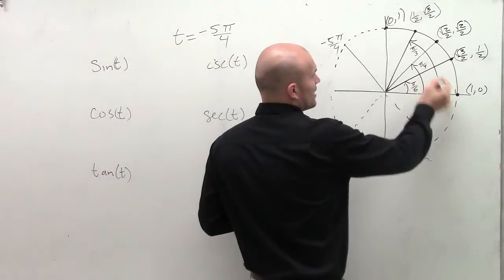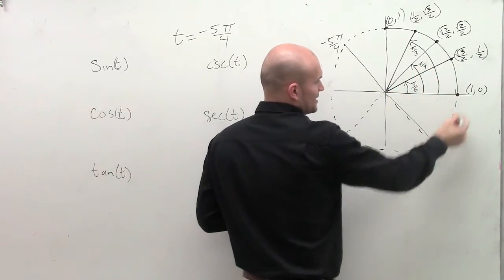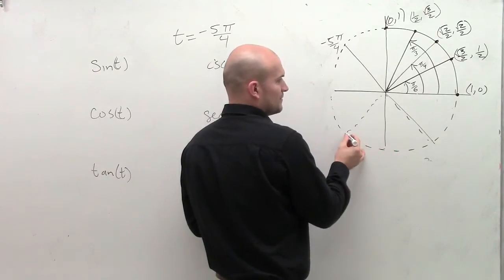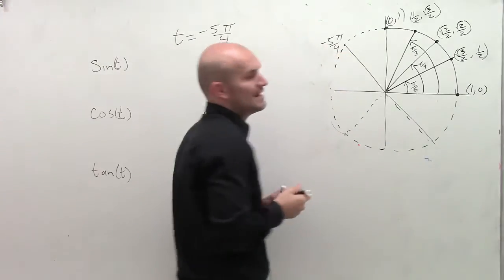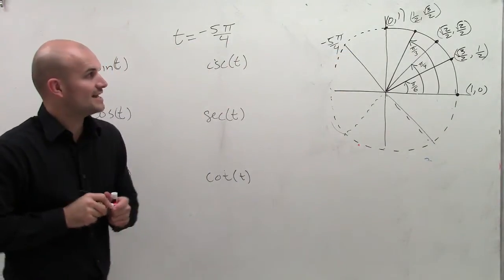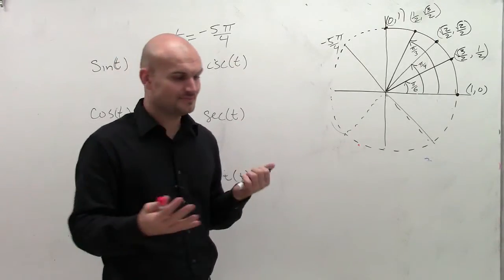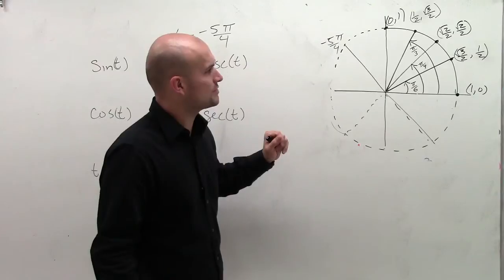So first of all, we need to determine where is negative 5 pi over 4. Well, remember, pi over 4 is going to be kind of like the halfway mark, right? So if I say here's negative pi over 4, here would be negative 2 pi over 4, negative 3 pi over 4, negative 4 pi over 4. So here's going to be our point negative 5 pi over 4. So our point negative 5 pi over 4 is right here.